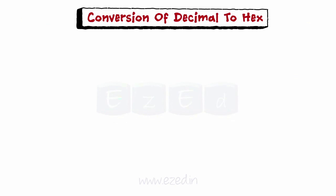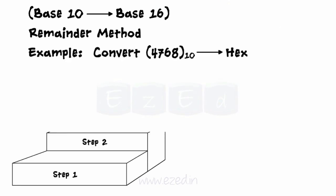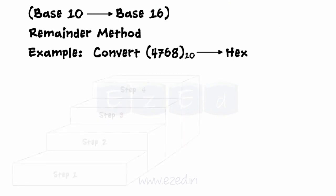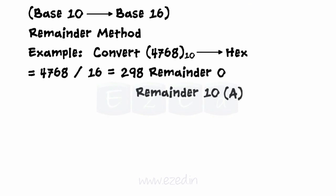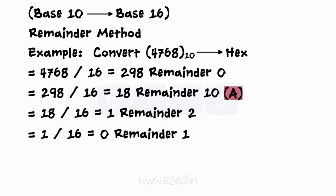For conversion of decimal to hex, from base 10 to base 16, the remainder method is used. 1. Divide the decimal number by 16. 2. Indicate the remainder to the right. If the remainder is between 10 and 15, indicate the corresponding hex digit A through F. 3. Continue dividing into each quotient and indicating the remainder, until the divide operation produces a zero quotient. 4. The base 16 number is the numeric remainder reading from the last division to the first. The answer is read from bottom to top, same as with the binary case.